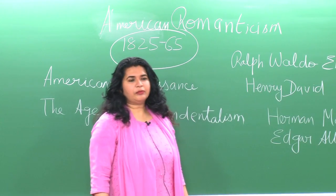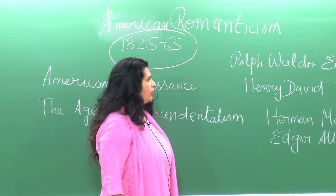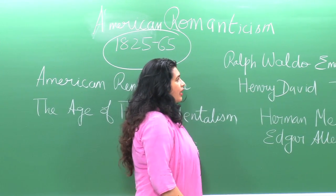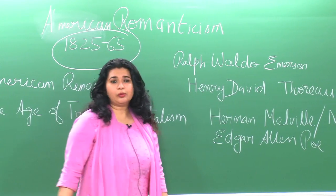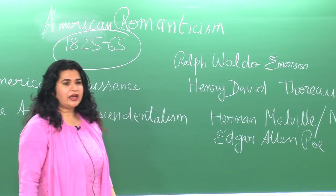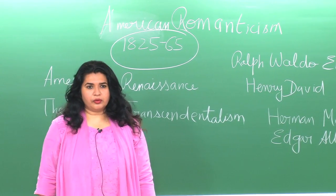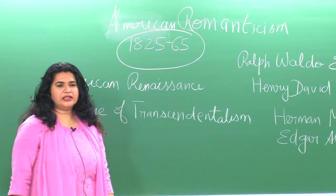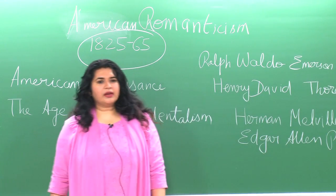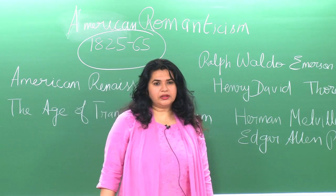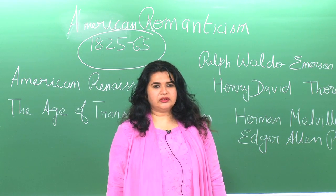The key names — and I am sure most of you are students of literature and are aware of them — are Ralph Waldo Emerson, Thoreau, Walt Whitman, Herman Melville, Nathaniel Hawthorne, and Edgar Allan Poe, although there are other key names also. Interestingly, both Emerson and Walt Whitman refer to America as a poem waiting to be written.